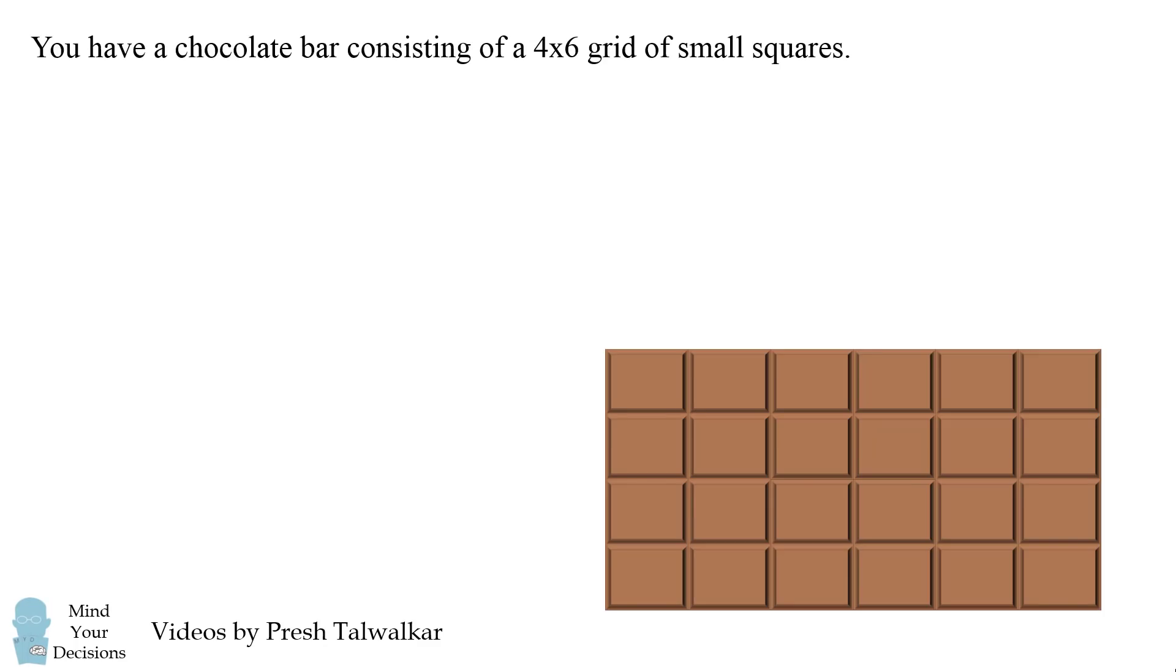You have a chocolate bar consisting of a 4 by 6 grid of small squares. What is the minimum number of cuts to split the bar into its 24 small squares?